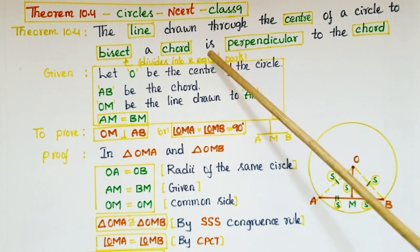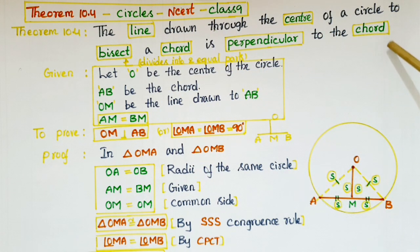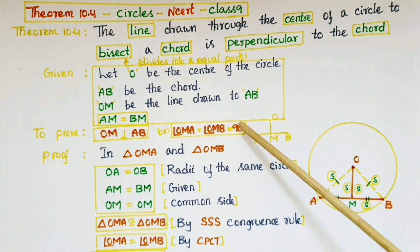Here we have to prove that this line is perpendicular to the chord. So we have to prove that OM is perpendicular to AB or angle OMA is equal to angle OMB is equal to 90 degrees.